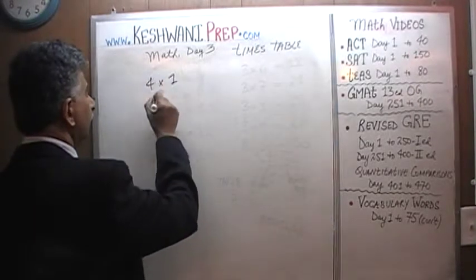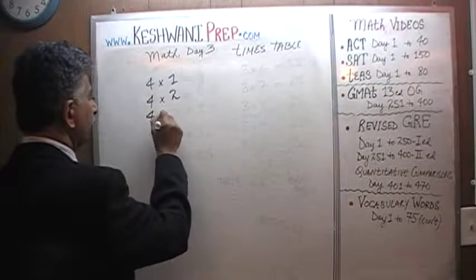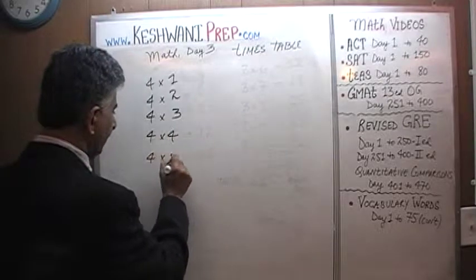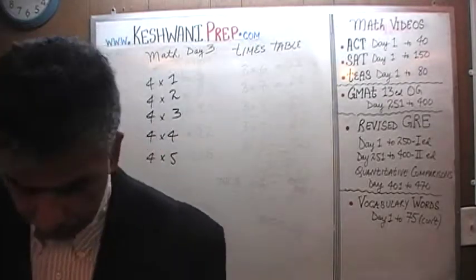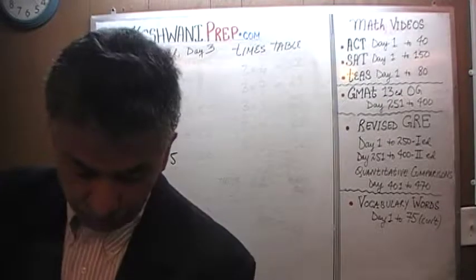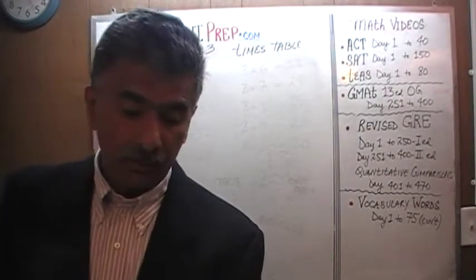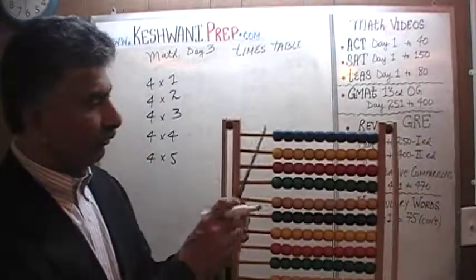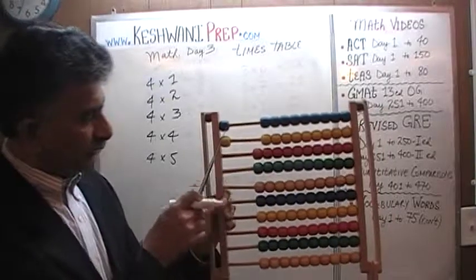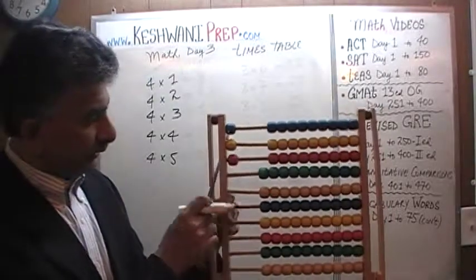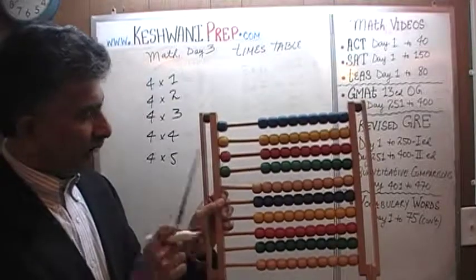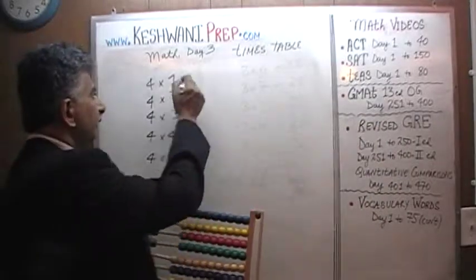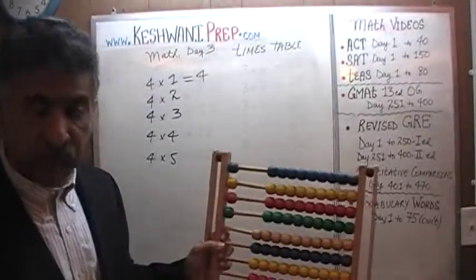Four ones are, four twos are, four threes are, four fours are, four fives are — let's find out the answers. We're going to count by fours today. So let's begin: four ones. We need four ones. There is one, two, three, four ones. One, two, three, four — obviously four ones are four.